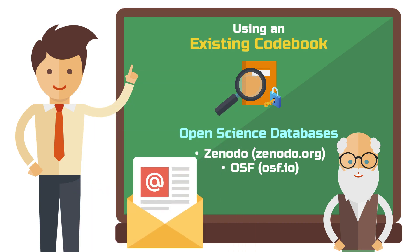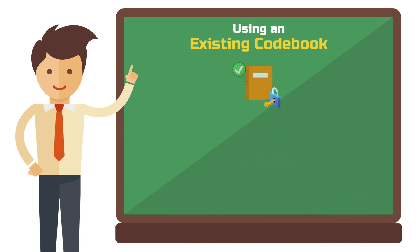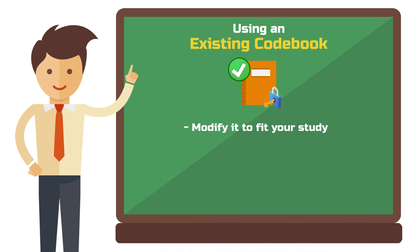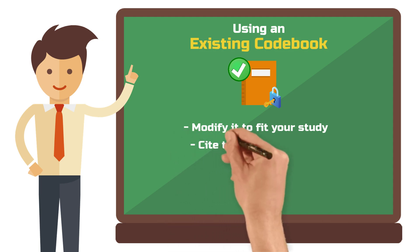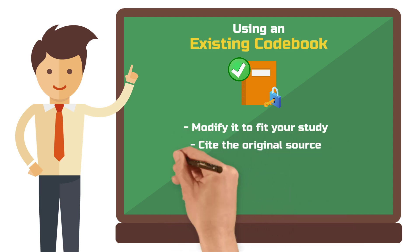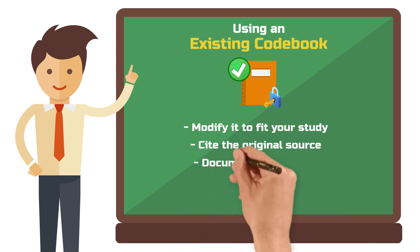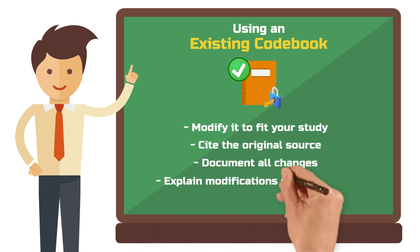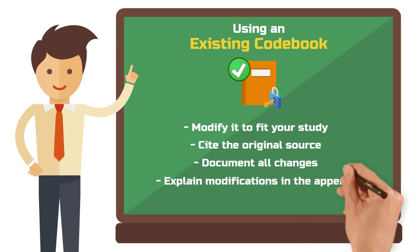Researchers often appreciate interest in their work and may be happy to share their codebook. Adapting a codebook: if you find a relevant codebook, you can modify it to fit your study. However, make sure to cite the original source and document any changes you made. If you include your adapted codebook in an appendix, provide a detailed explanation of modifications.